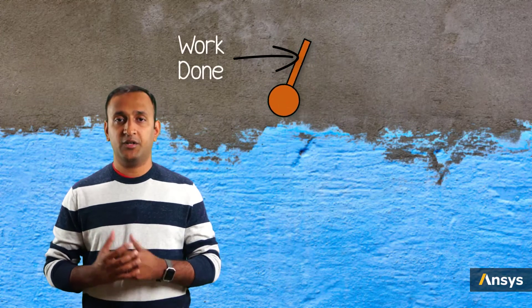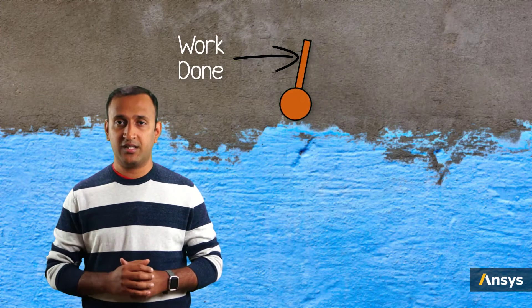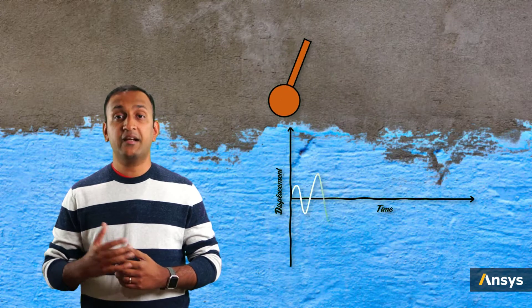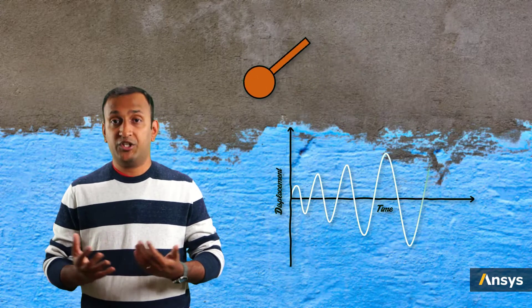Dynamic instabilities develop in structures when there is a continuous input of kinetic energy to the system from external loads. As a result, it continues to move with increasing amplitude and potentially gets out of control.